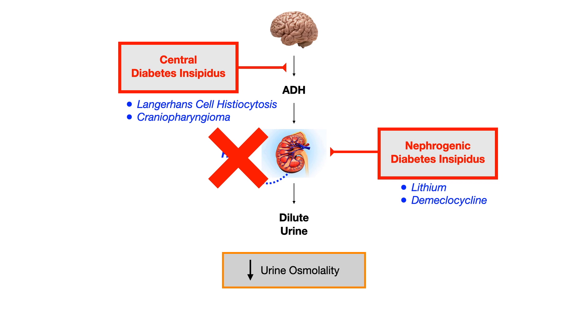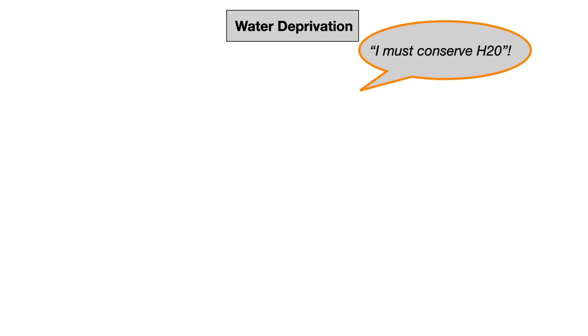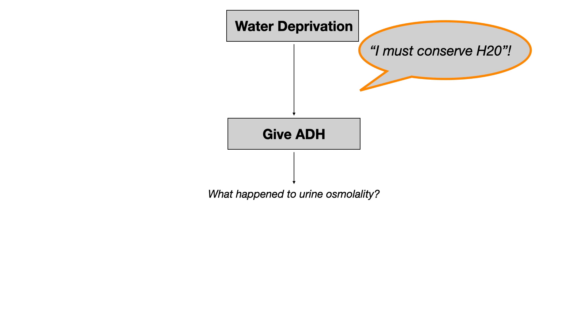On exams — more geared toward Step 2 and Step 3 but can appear on Step 1 — the way to figure out whether you're dealing with central DI or nephrogenic DI is the water deprivation test. You deprive the patient of water for some predetermined amount of time. Then the key step is to give them ADH. Depending on what happens to the urine osmolality after water deprivation and ADH administration, this will determine whether it's central or nephrogenic DI.